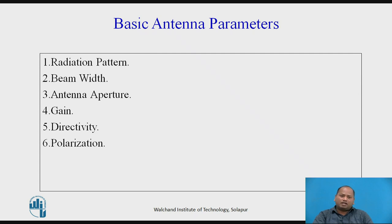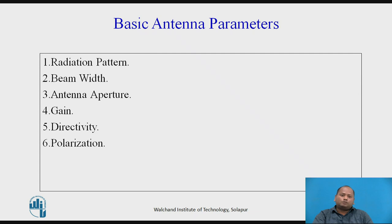Directivity and polarization are also key parameters. Radiation pattern is the plot of the electromagnetic field with respect to the frequency of observation — the different fields emitted by the antenna are plotted in a graph with respect to the frequency of operation.